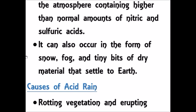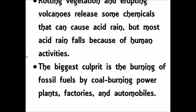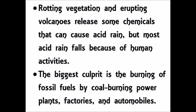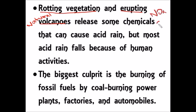Let's discuss the various causes of acid rain. Causes may be natural or human-made. An example of natural causes is rotting vegetation and volcanic eruptions, which release chemicals containing nitrous oxide and sulfur oxide that combine with water in the atmosphere and form acid rain. But this is only a small portion.